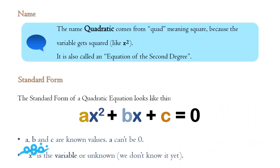About the etymology of the word — where did the name come from? The name 'quadratic' comes from 'quad,' which means square in Latin, because the variable gets squared. When I say x to the power 2, or x squared, it is also called an equation of the second degree. Equations are categorized by the largest degree in the function, which is the power of the leading coefficient.